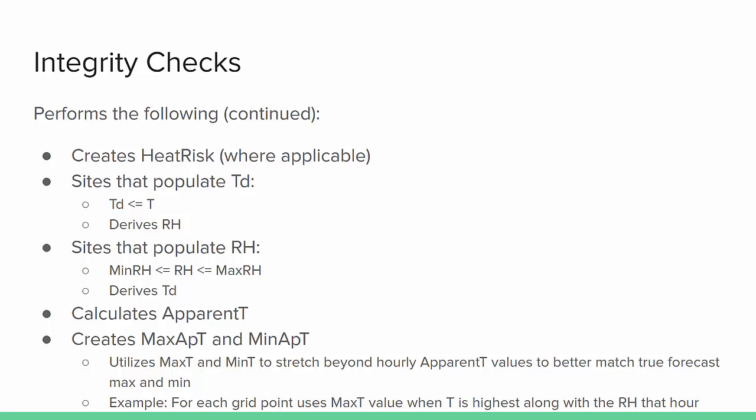Note that the max and min apparent temperature utilizes your Max T and Min T to stretch beyond your hourly apparent T grids, so this better matches up with the true max and min of your forecast. For example, for each grid point it will utilize Max T when your T is highest at that grid point, along with the RH at that hour of the maximum T.